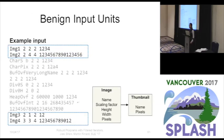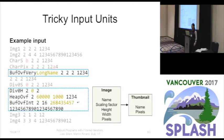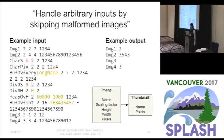We tested those programs using illegal input units that don't satisfy the specification — for example, a letter where an integer is expected — and also tricky input units that still satisfy the specification but may still cause errors, such as image dimensions that are too large causing memory allocation to crash. When we told participants to write a program that handles arbitrary inputs by skipping malformed images, one desirable output skips all the illegal and tricky images, though we also accepted a few other reasonable outputs for rare cases.